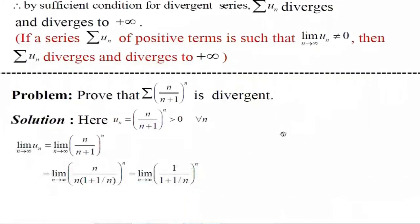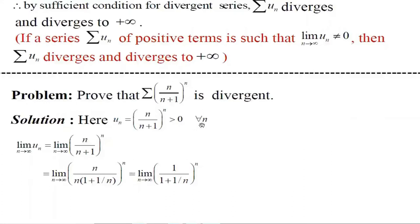Now let us prove that the series Σ(n/(n+1))^n is divergent. Here, let u_n = (n/(n+1))^n. Since n is a natural number, the value (n/(n+1))^n is greater than 0 for all n.